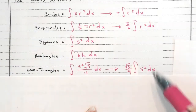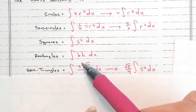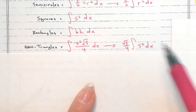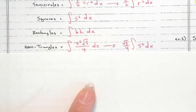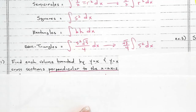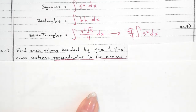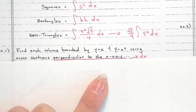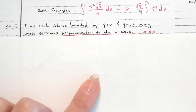Notice how a lot of these formulas look really similar. We write the general form first and then plug in whatever we need. So for this example, it says perpendicular to the x-axis — perpendicular to the x-axis means that we're setting up the integral in terms of x.